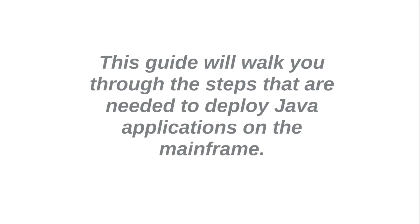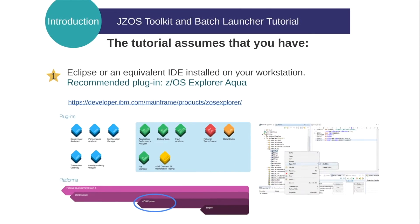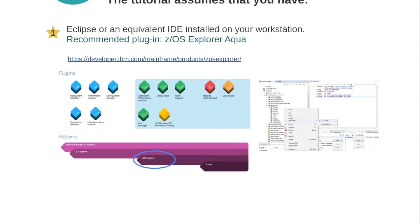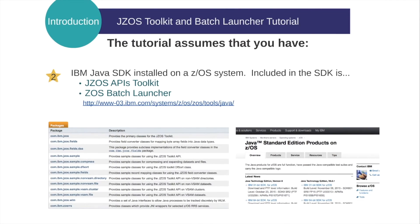This guide will walk you through the steps that are needed to deploy a Java application on the mainframe. The tutorial assumes that you have Eclipse or an equivalent IDE installed on your workstation. We personally recommend the z/OS Explorer Aqua Edition. Additionally, you should have the IBM Java SDK installed on a z/OS system. These classes depend on a Java Native Interface, or JNI library, which is packaged with the supported IBM z/OS Java SDKs.